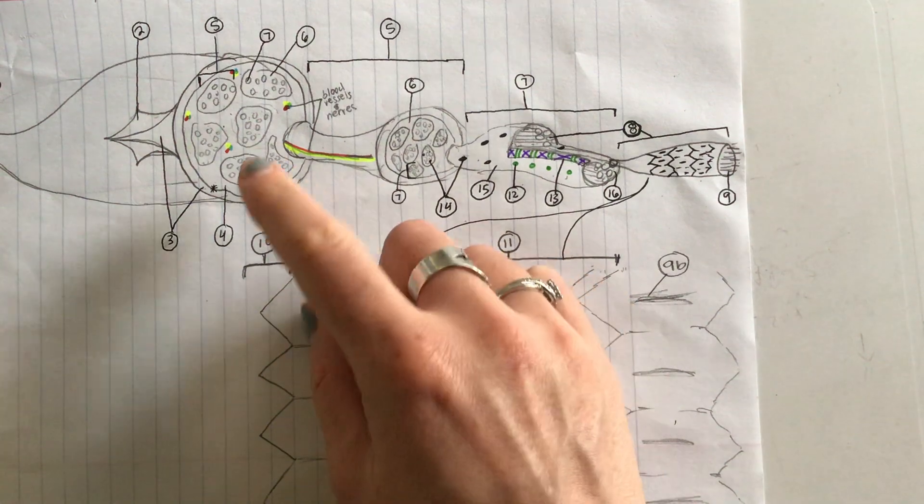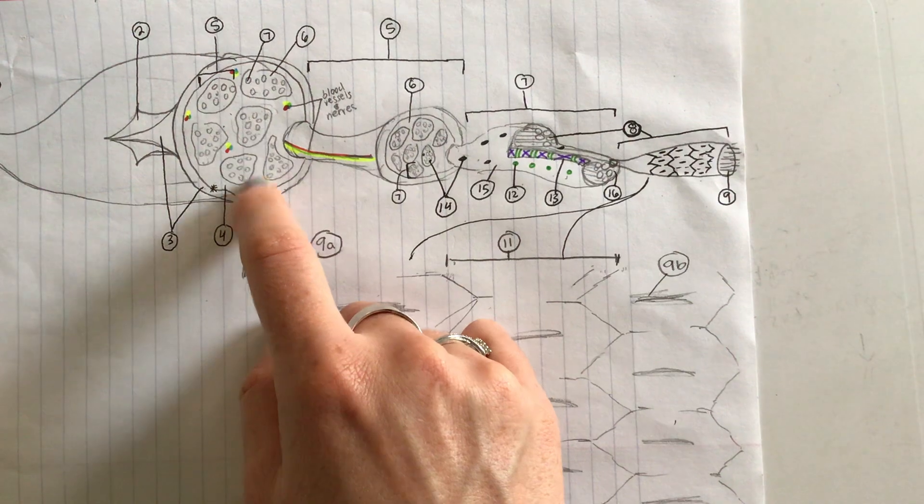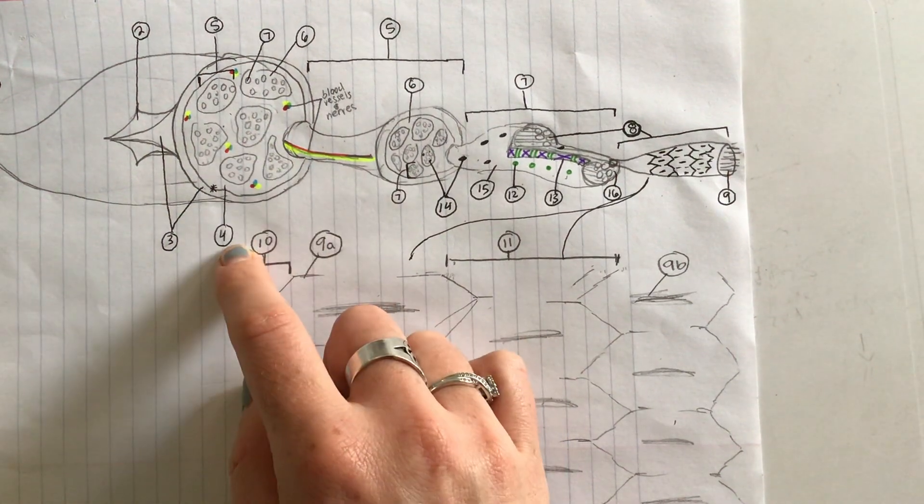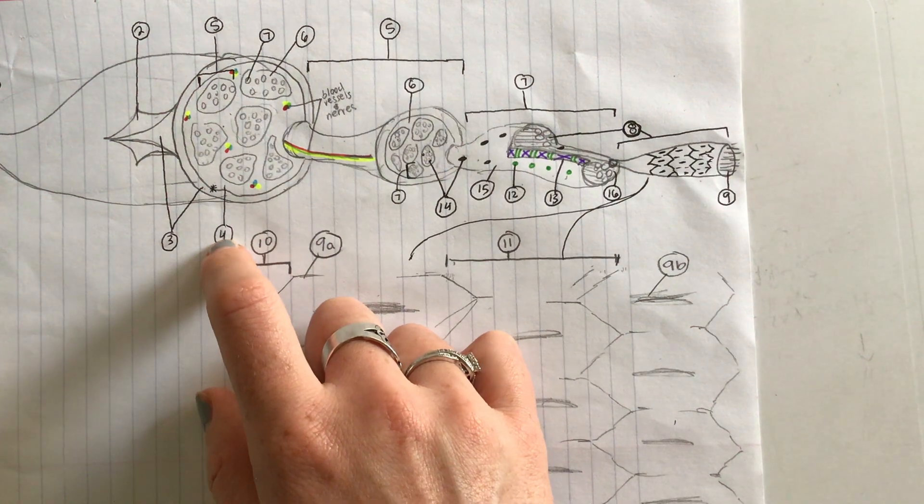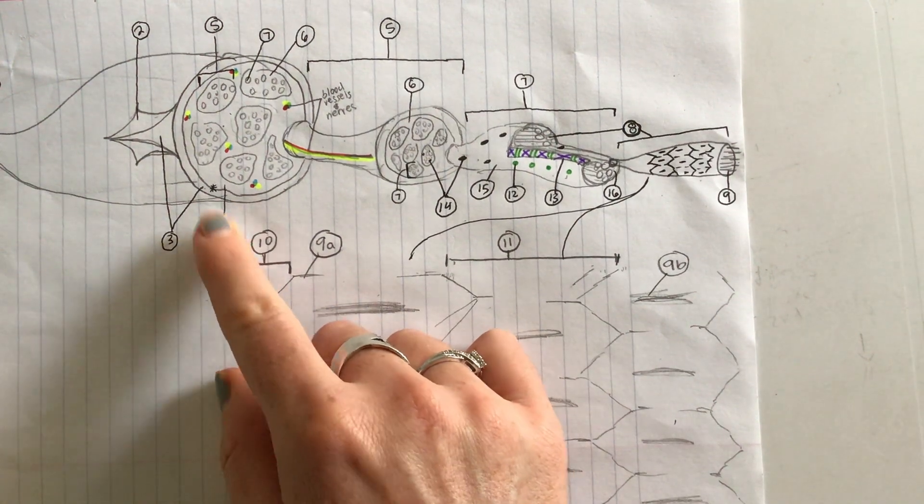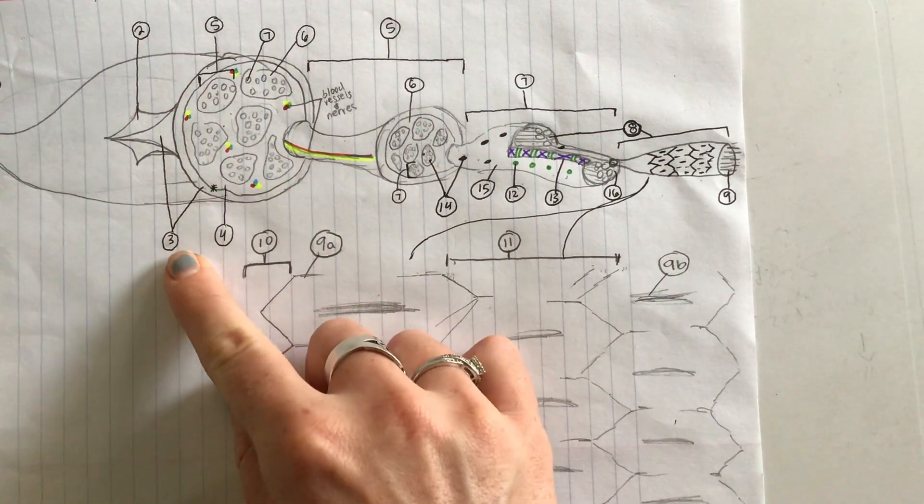Number 4 surrounds these fascicles. It's a connective tissue surrounding each of these fascicles. What is number 4 labeling? It is the perimysium.